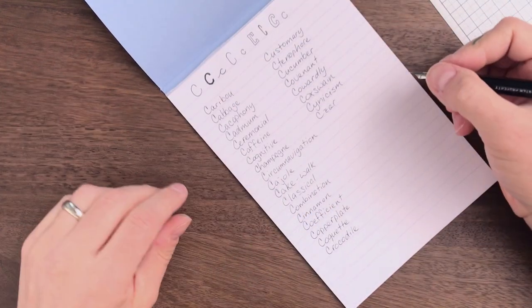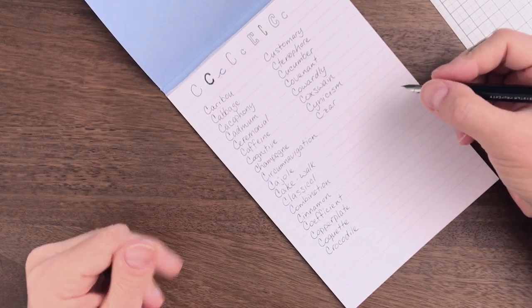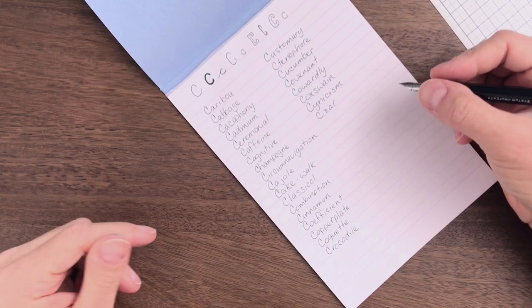There you go, 26 different C words, each containing each letter of the alphabet. So hopefully that was some good practice, hopefully you enjoyed it.